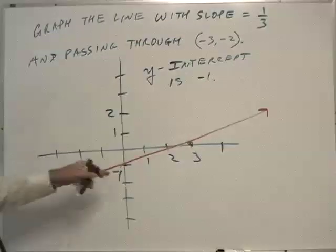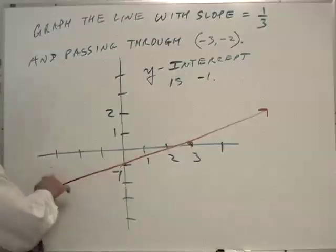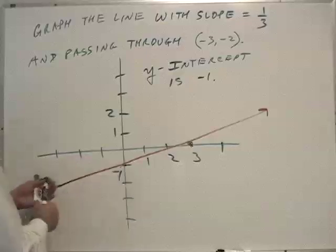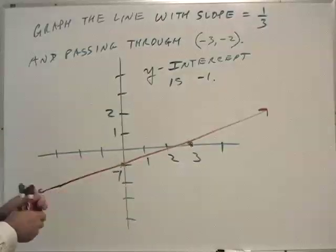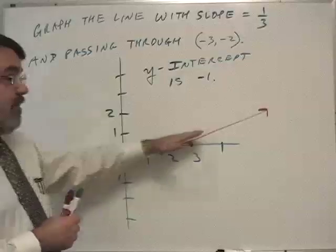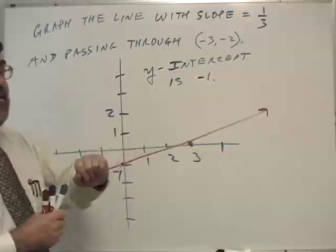All right. And we got that again from taking this point and going up over three. We landed exactly at the y-axis. Now, I have slope. I have the y-intercept.